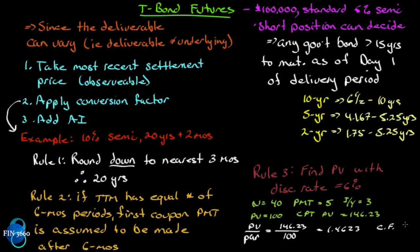The conversion factor of 1.4623 means that if you're going to deliver this 10% semi bond with 20 years and two months left on a standard six percent semi, you would need 1.4623 of the standard bonds to be equivalent to this one bond. So we take the most recent settlement price and multiply by that conversion factor to get the price we would receive.